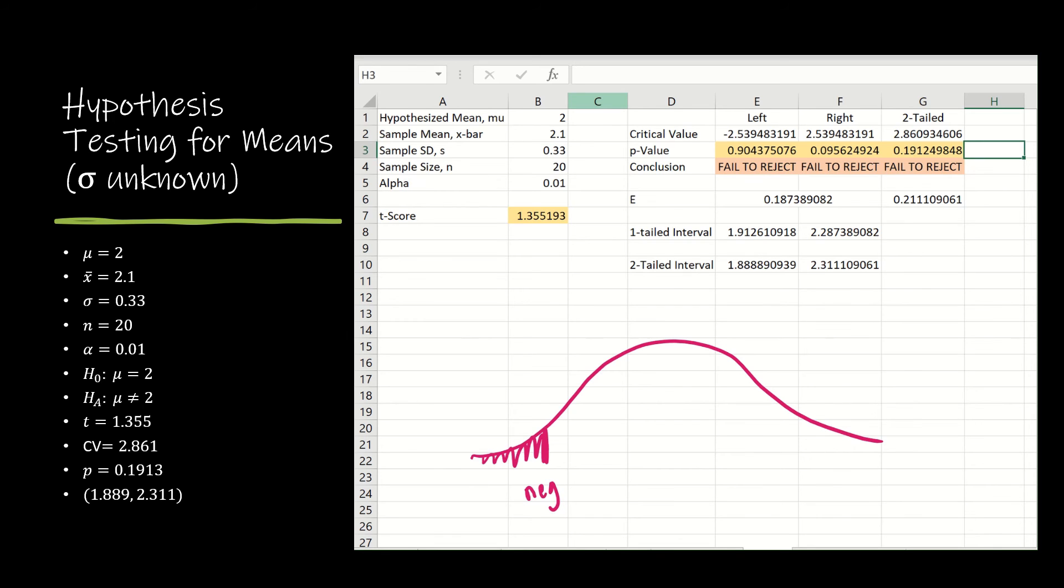And then I would take it times two. So if it were negative, I would take two times area to the left.